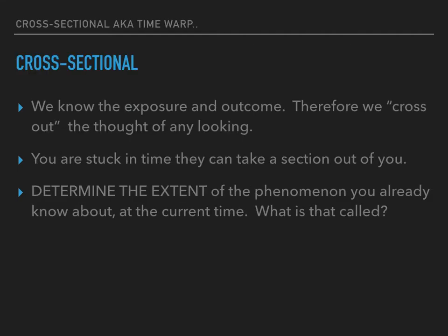Cross-sectional: we know the exposure and outcome, so we cross out the thought of looking forward or backwards. You are stuck in time so they can take a section out of you. If you're frozen, your head can't move and you can't look forward or backward. You use a cross-sectional study to determine the extent of a phenomenon that you already know about that's occurring in a community at the current time. That's prevalence — you can get prevalence out of a cross-sectional study.